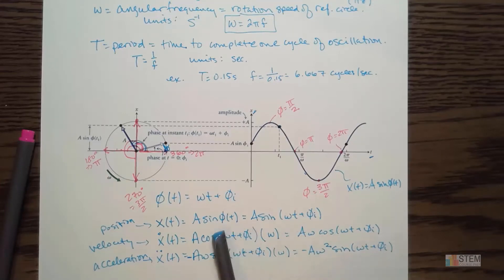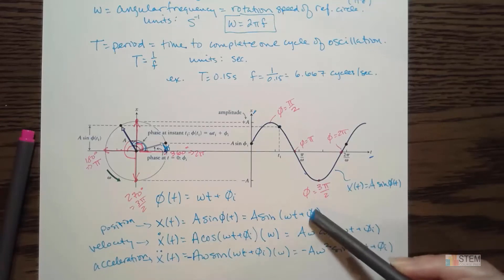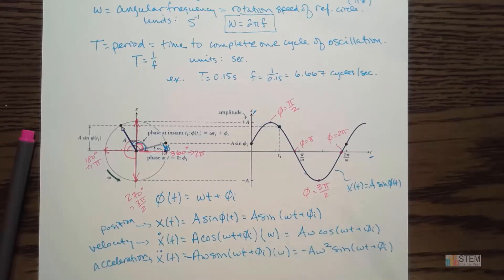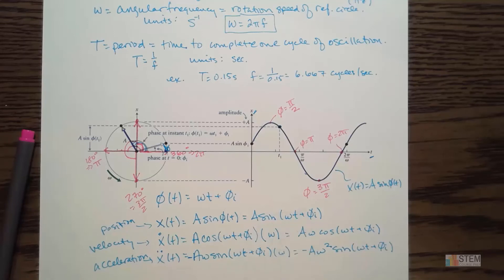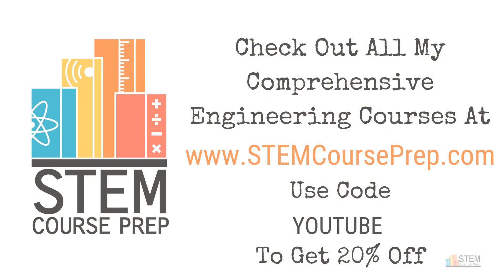Hopefully that explained the difference between f, the natural frequency, and omega, the angular frequency, and how the period is related to that, and how they're all related to phase and the reference circle. A lot of the time in your equations you might see the phi sub i term go away — you'll just see A sine omega t. Hopefully that made sense, and I'll see you guys next time.